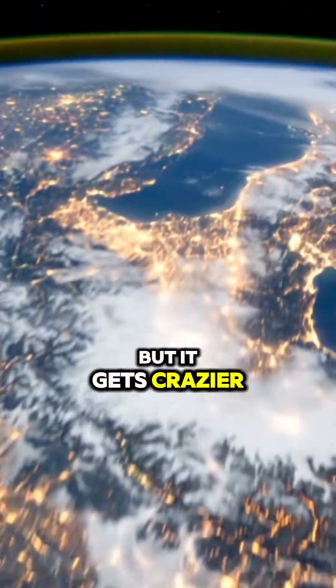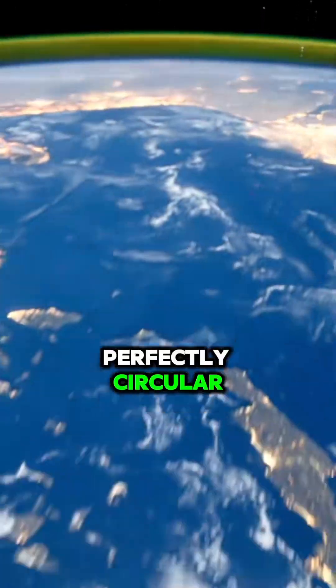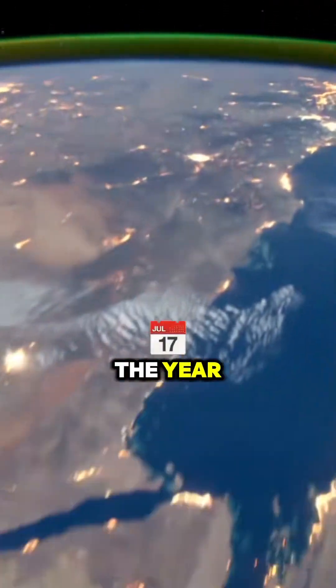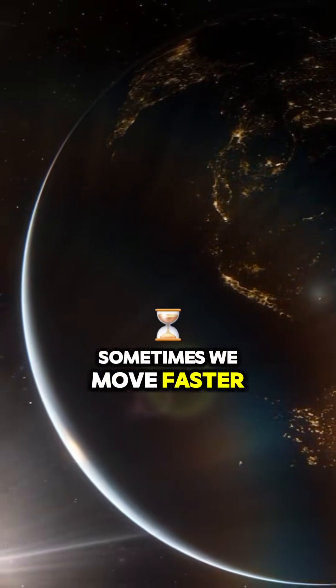But it gets crazier. Because Earth's orbit isn't perfectly circular, our speed changes throughout the year. Sometimes we move faster, sometimes slower.